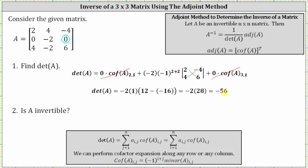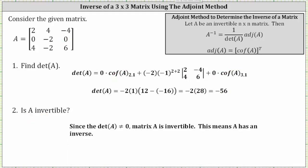For number two, is A invertible? Since the determinant does not equal zero, matrix A is invertible, which means matrix A does have an inverse.